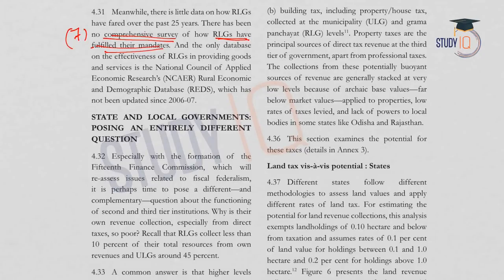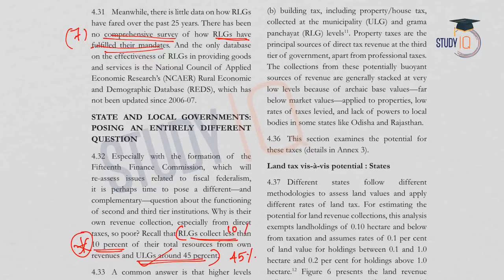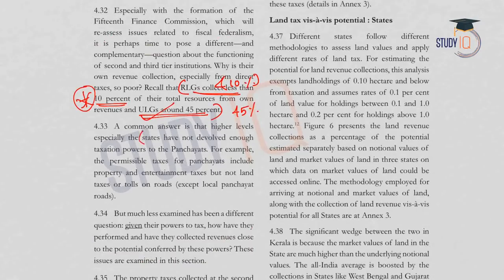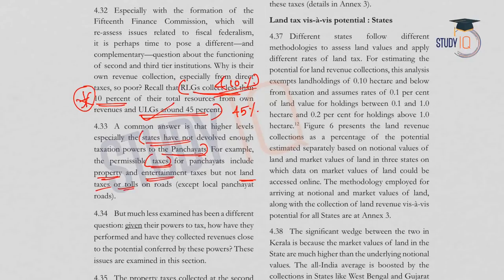In conclusion, rural local governments collect less than 10% of their total resources from their own revenues, while urban local governments collect around 45%. States have not devolved enough taxation power to Panchayats, which is why they are underperforming. Taxes available to Panchayats include property taxes and entertainment taxes, but not land taxes or tolls — they are not given authority to collect these, which contributes to their underperformance.